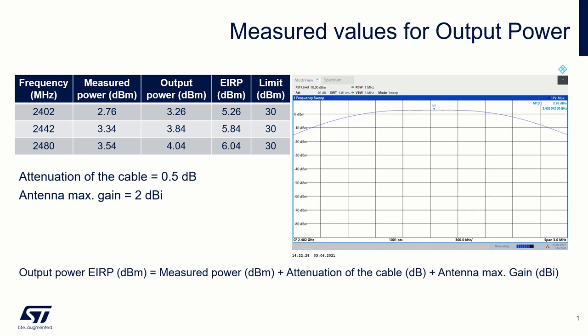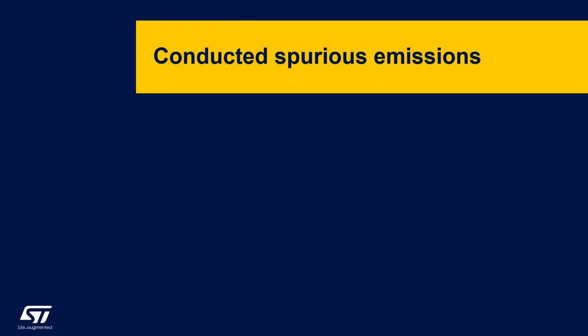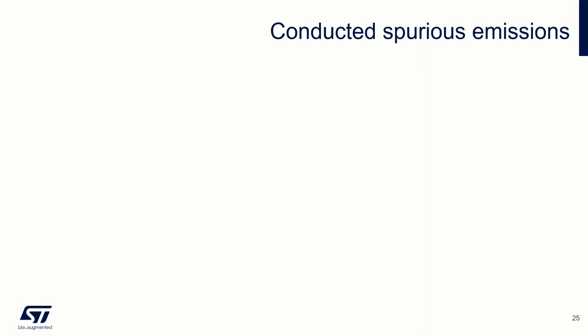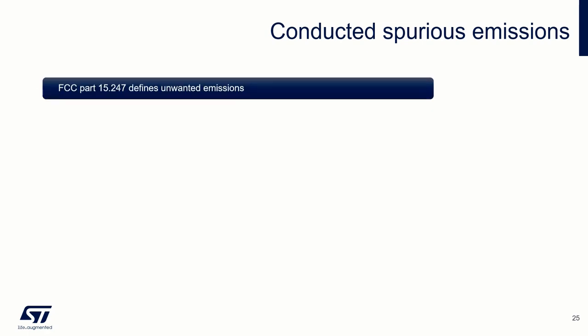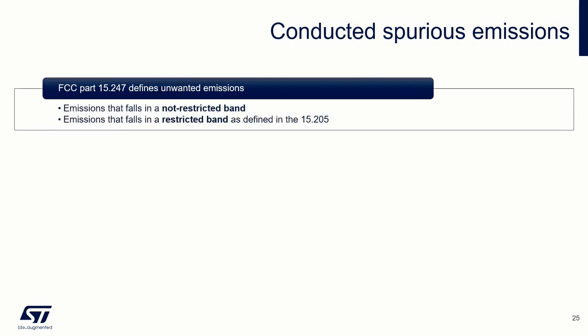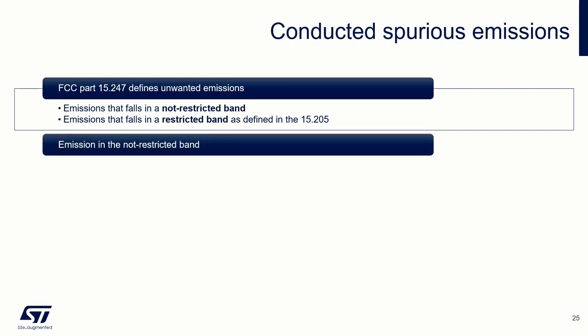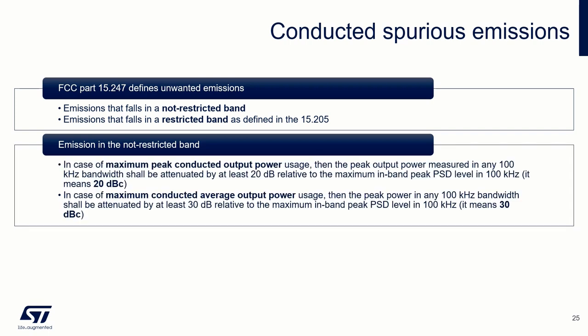We will now deal with unwanted radiation — frequencies that arise as harmonics of the fundamental signal or as non-harmonic signals which arise, for example, as mixing products. FCC Part 15.247 defines unwanted emissions as emissions that fall in a non-restricted band and emissions that fall in a restricted band as defined in Part 15.205. For emissions in the non-restricted band, FCC specifies: if the maximum peak conducted output power procedure was used to demonstrate compliance of the fundamental emission output power, then the peak output power measured in any 100 kHz bandwidth outside of the authorized frequency band shall be attenuated by at least 20 dB relative to the maximum in-band peak PSD level in 100 kHz.